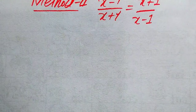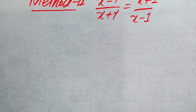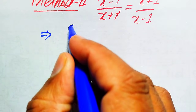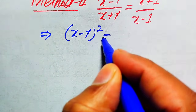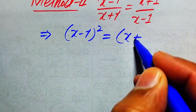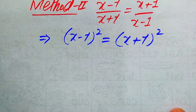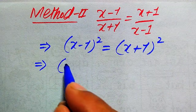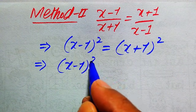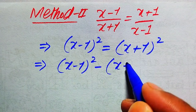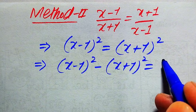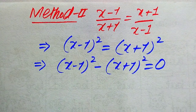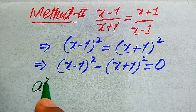In the second method, the first steps are the same. We cross multiply to get (x - 1)² = (x + 1)². Then we move the right-hand side term to the left: (x - 1)² - (x + 1)² = 0.